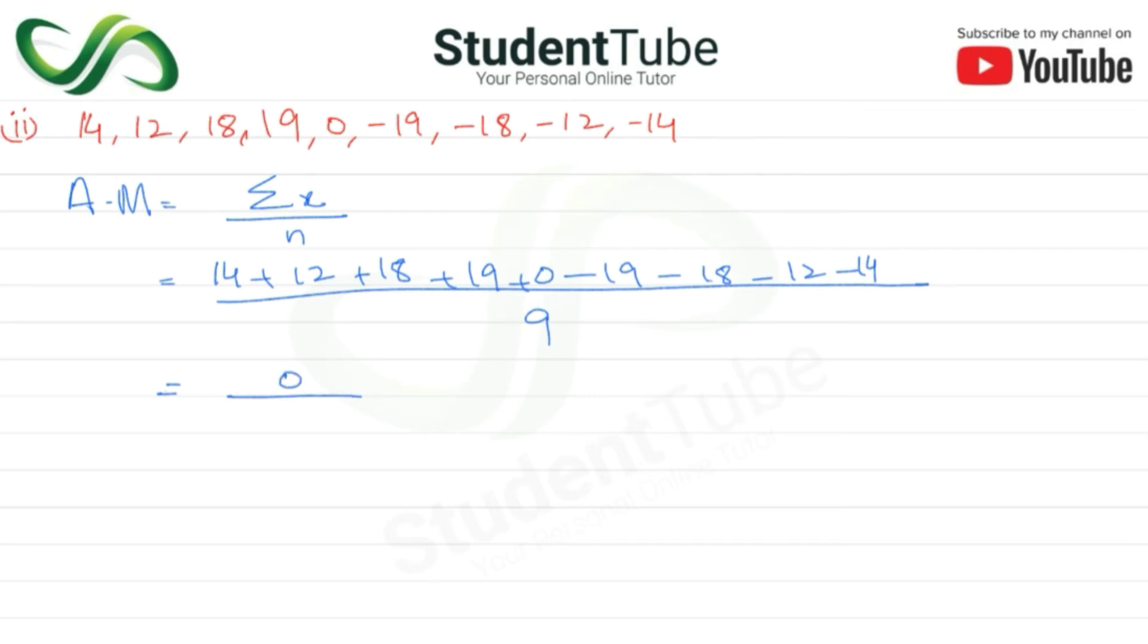Because see here plus 19 minus 19, plus 18 minus 18, plus 12 minus 12, plus 14 minus 14, cancel. 0 upon 9. So 0 divided by 9, then answer. So arithmetic mean is 0.